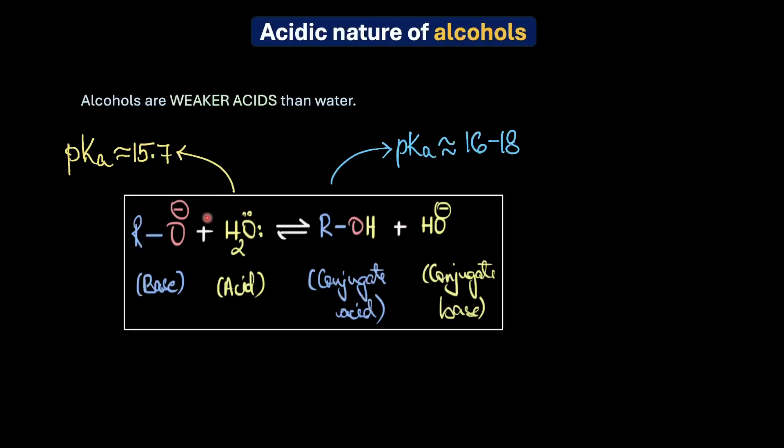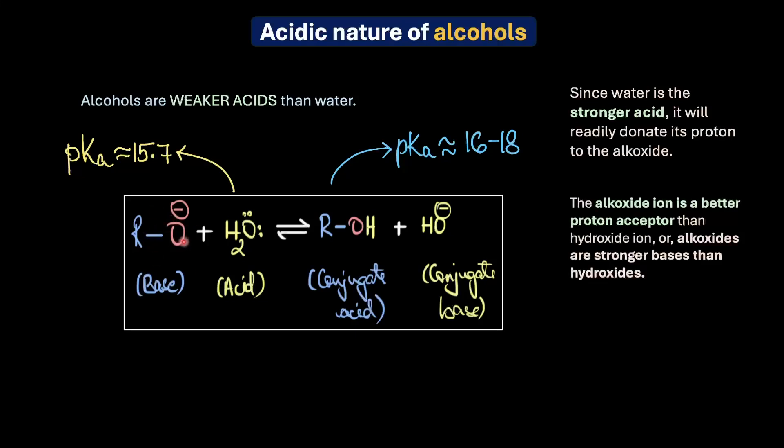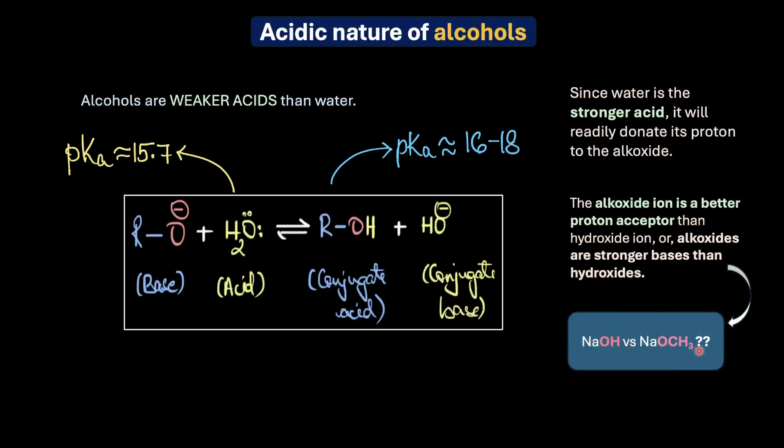You see, since water is a stronger acid on the left and alcohol is a weaker acid, the equilibrium naturally wants to move towards the right, towards forming a weaker acid and weaker base. And this leads to a significant amount of alcohol and hydroxide ion being formed. So you can see that this clearly demonstrates water's greater proton donating ability as compared to an alcohol, or in other words that alkoxide ion is a better proton acceptor as compared to a hydroxide ion. So, based on that, which among the two do you think would be a stronger base? Would it be sodium hydroxide or sodium methoxide? What did we just say? We said that alkoxide ions are better proton acceptors. That means they are better bases, stronger bases than hydroxide ion. So that means sodium methoxide is a stronger base than sodium hydroxide.